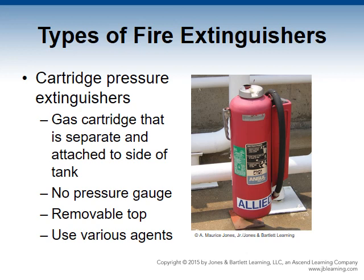Cartridge pressure extinguishers are similar to stored pressure extinguishers, but the gas is stored in a separate cartridge attached to the side of the tank. When activated, it punctures the cartridge and the gas is expelled into the tank, forcing the agent out. Because the cartridge is sealed, there is no need for a pressure gauge, but there is a lack of constant pressure. The top can be removed without dumping the agent or losing pressure, facilitating easy maintenance. It uses loaded stream, foam, dry chemical, and dry powder agents.